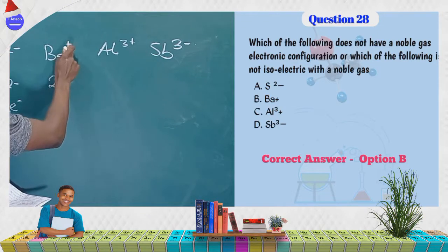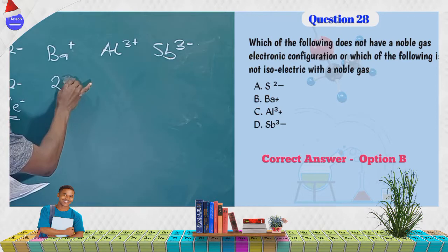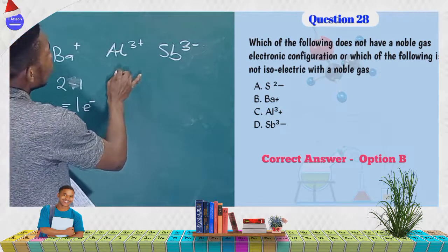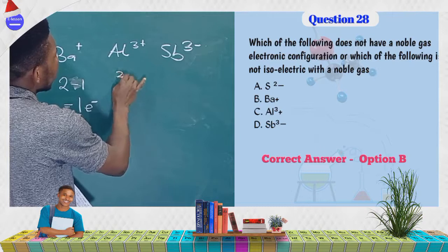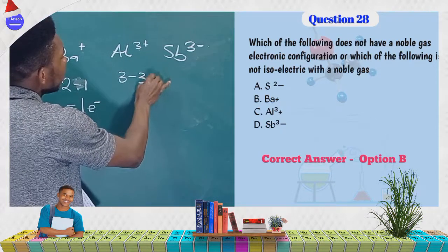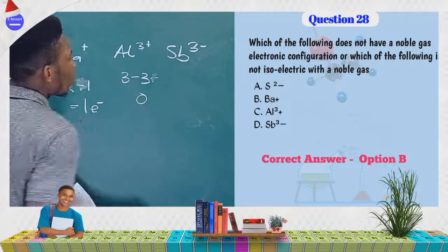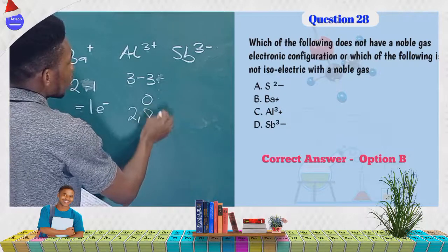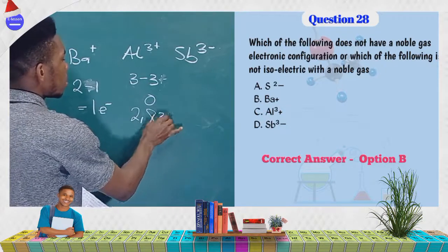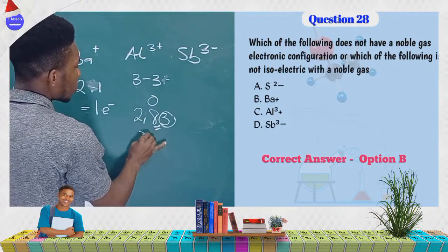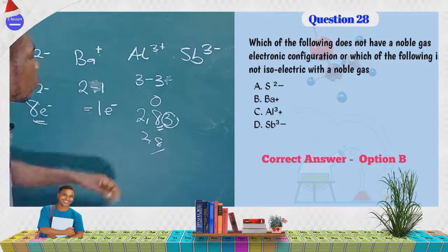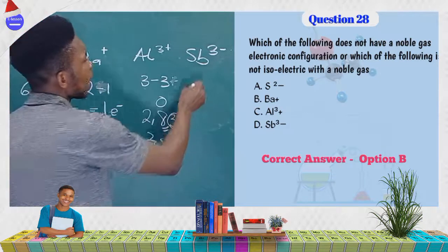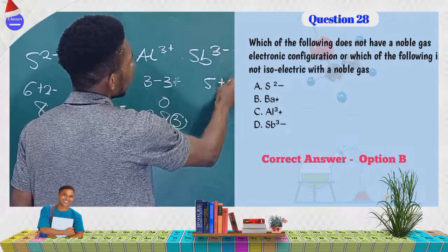Barium is group 2. Ba⁺ means barium has lost only one electron, giving it 2 minus 1 equals 1 electron in the outermost shell — not a noble gas configuration. Aluminium is group 3; Al³⁺ means it has given out all 3 outer electrons. Its configuration becomes 2, 8 — which matches neon — so it is isoelectronic with a noble gas.